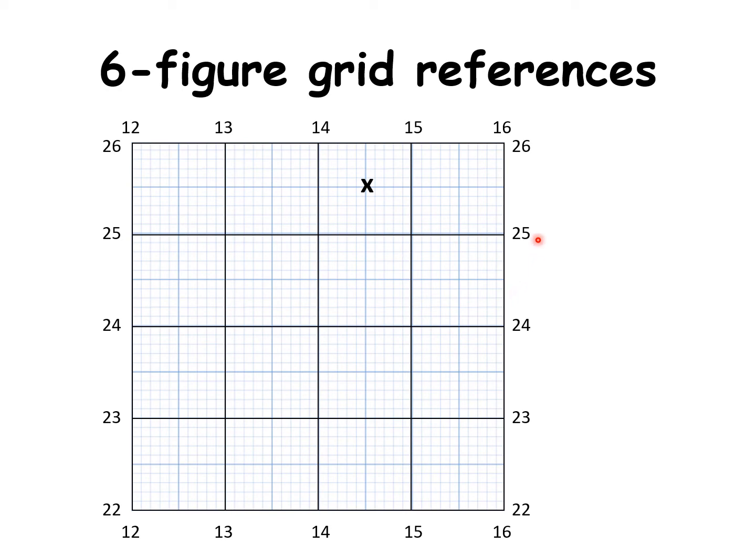And also at the side, we know it's in square 25, but it's actually not on line 25 and it's not on line 26. It's between those two lines. So again, we split it sideways going from 0 to 10. So it'd be 1, 2, 3, 4, 5, 6, 7, 8, 9, 10. And X there is on 5 going up. So it would be 25, 5.